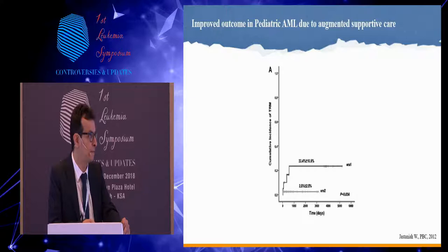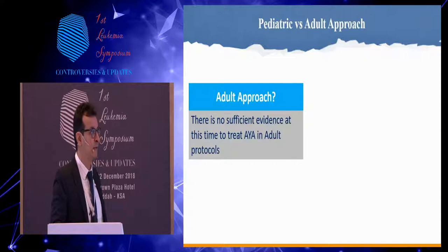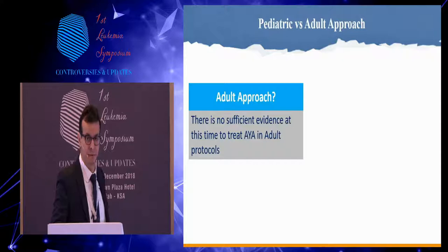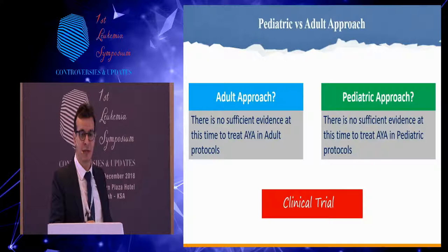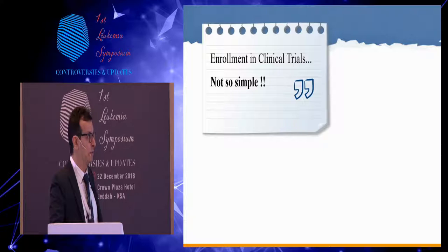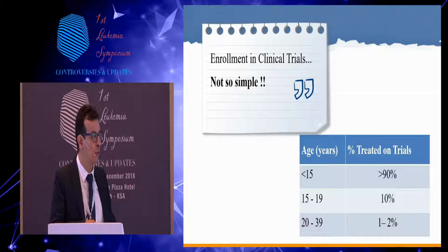Which approach should we pick — adult or pediatric — based on this meta-analysis? There is no sufficient evidence to treat AYA on an adult protocol. At the same time, there is no sufficient evidence to treat them on a pediatric protocol. We need clinical trials to answer such questions. This is a big challenge because enrollment of AYA in clinical trials is very low compared to children, where enrollment reaches 90%, while AYA enrollment ranges from only 1 to 10%.